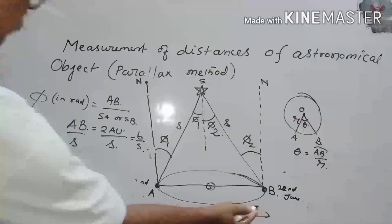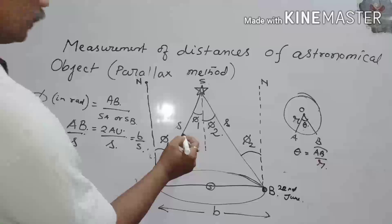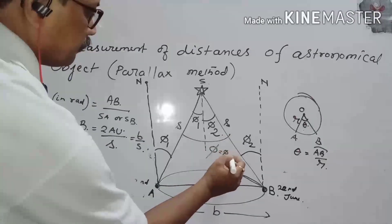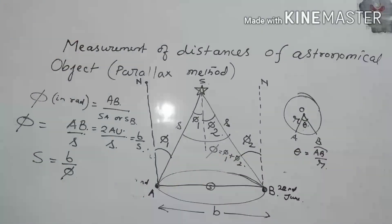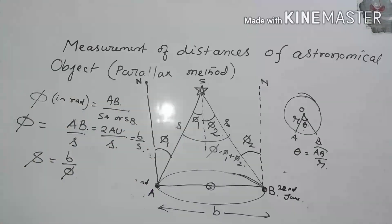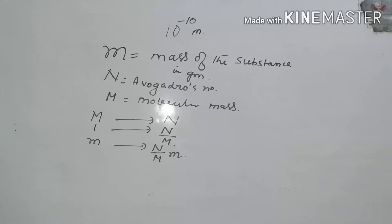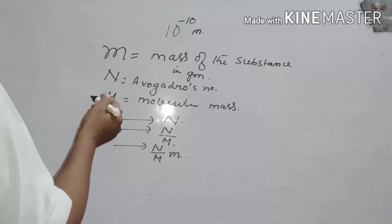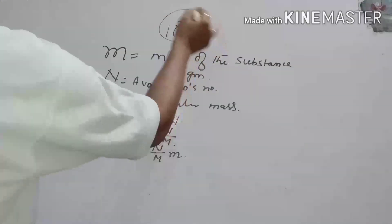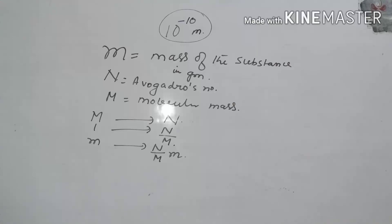Knowing the value of B and knowing the value of the total angle phi, which equals phi 1 plus phi 2, we can calculate S — the distance between the star and Earth. This method is used to measure distances of the order of 10⁻¹⁰ meters, which is the size of an atom.